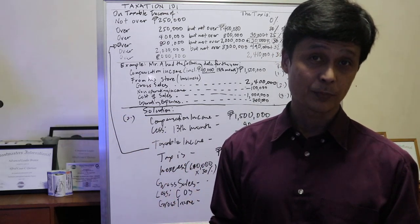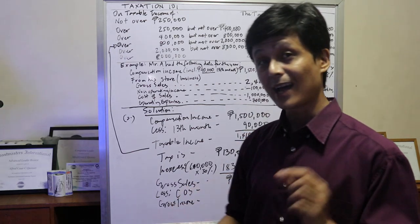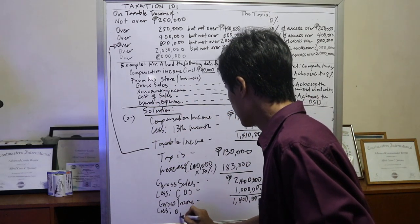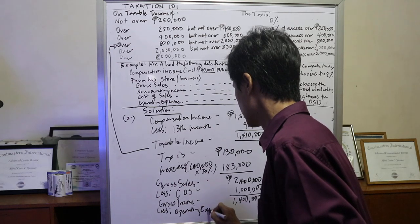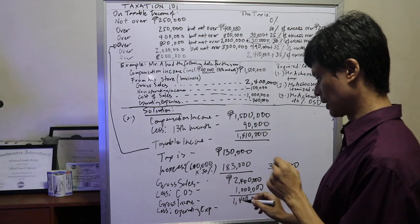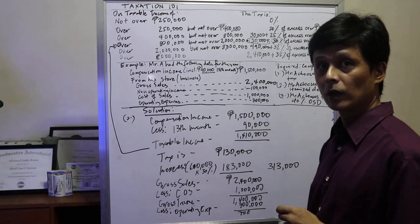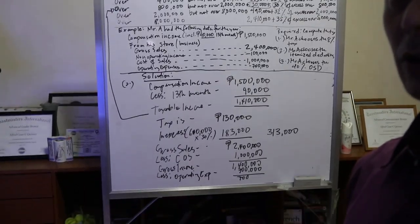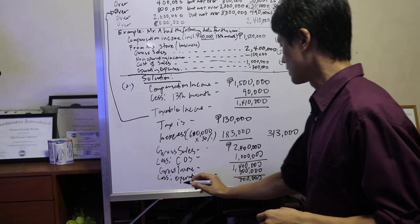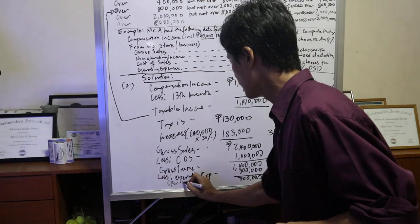Like electricity, rent, utilities - iba pa ito sa cost of sales. So ililis mo dun since itemized nga ito. So less operating expenses. And to save even more on our tax payment, we need to consider all itemized deductions. So less 700,000, you will get 700,000. This 700,000 would be your operating income.